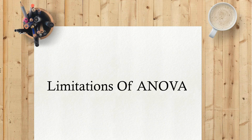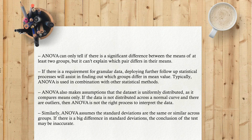Limitations of ANOVA. ANOVA can only tell if there is a significant difference between the means of at least two groups, but it can't explain which pair differs in their means. If there is a requirement for granular data, deploying further follow-up statistical processes will assist in finding out which groups differ in mean value. Typically, ANOVA is used in combination with other statistical methods. ANOVA also makes assumptions that the data set is uniformly distributed, as it compares means only. If the data is not distributed across a normal curve and there are outliers, then ANOVA is not the right process to interpret the data. Similarly, ANOVA assumes the standard deviations are the same or similar across groups. If there is a big difference in standard deviations, the conclusion of the test may be inaccurate.